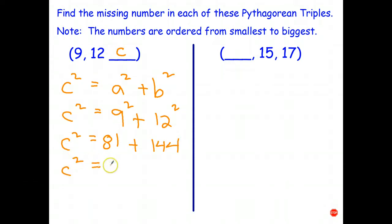Add those together. That gives me 225. Take the square root of both sides. This is stuff you've done a few times already. And that tells me c is equal to 15. So 9, 12, 15. c equals 15.